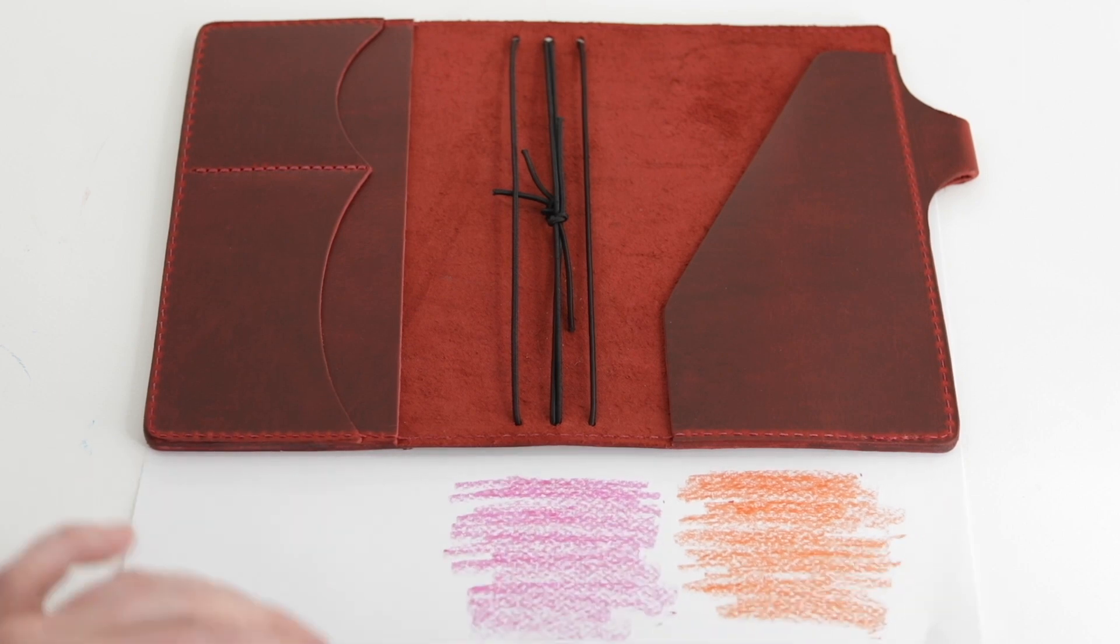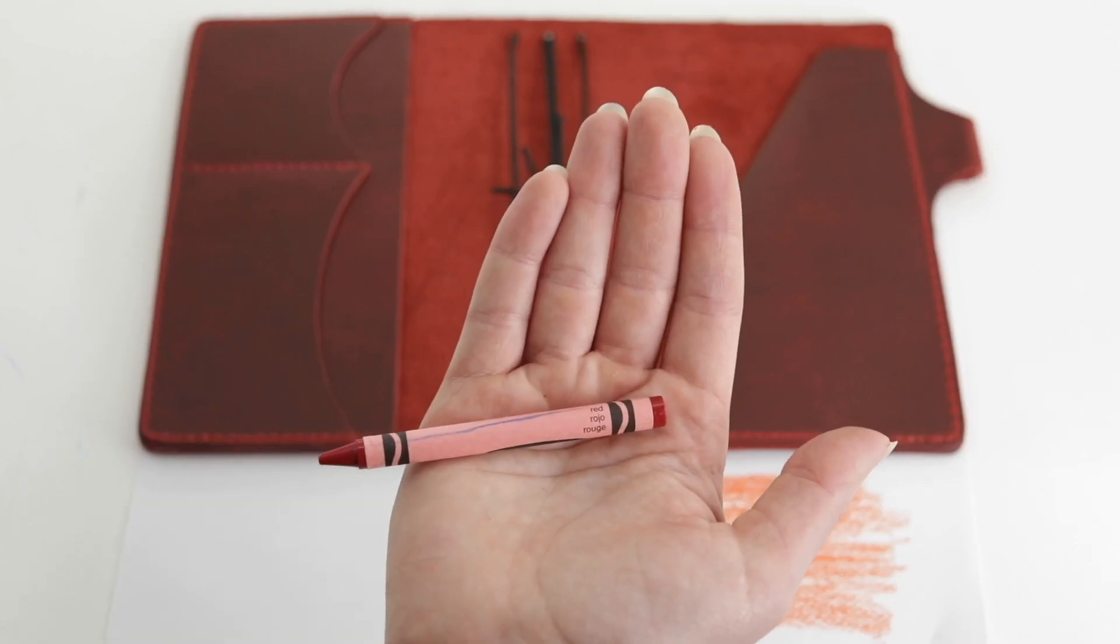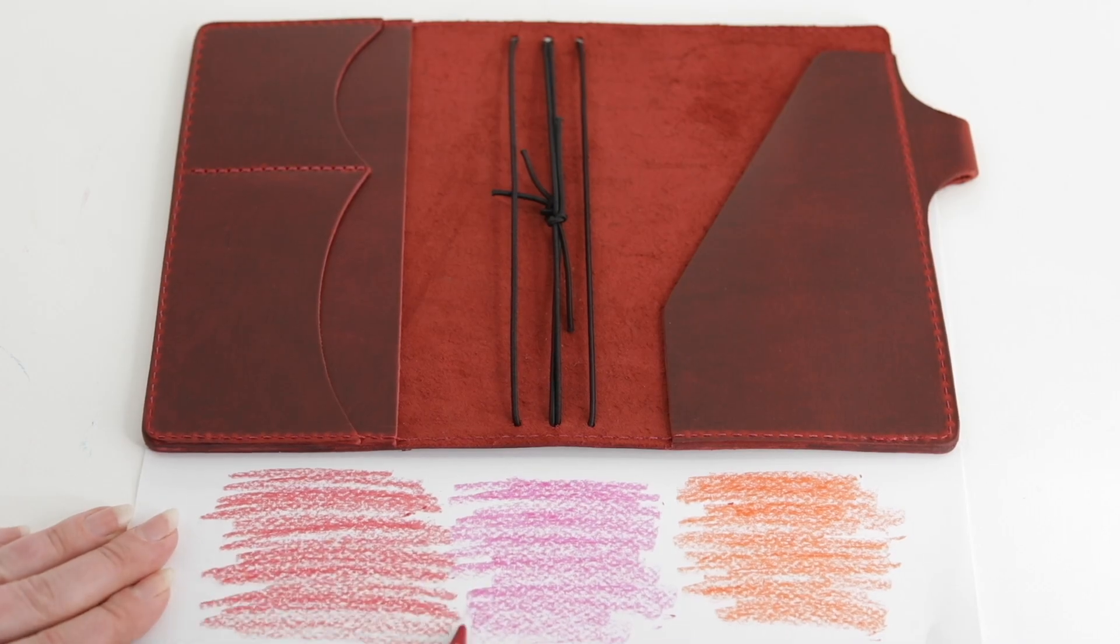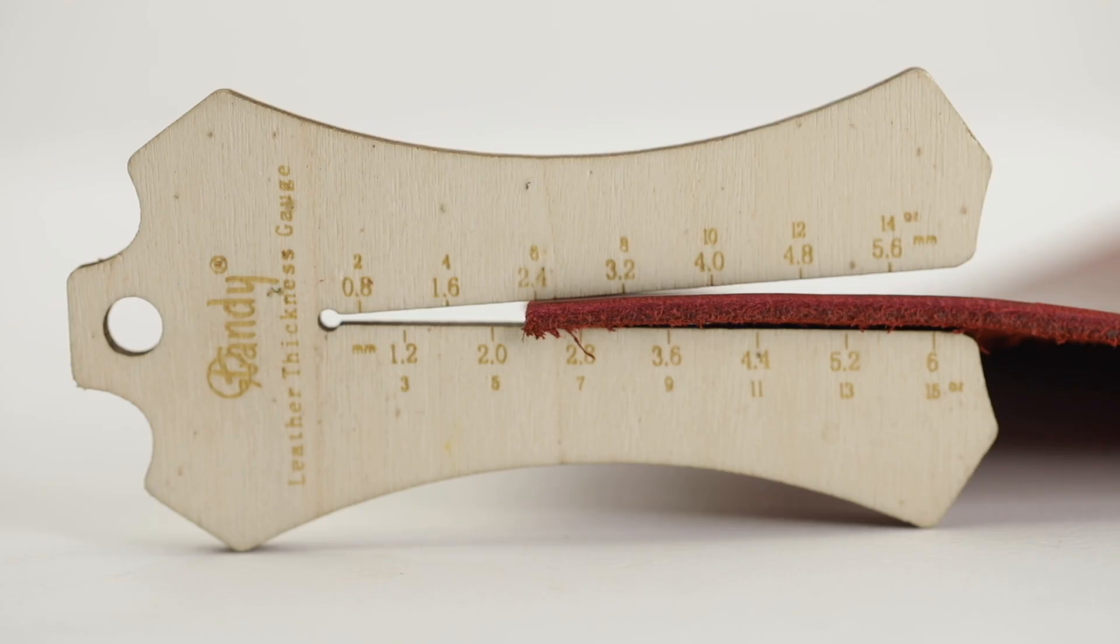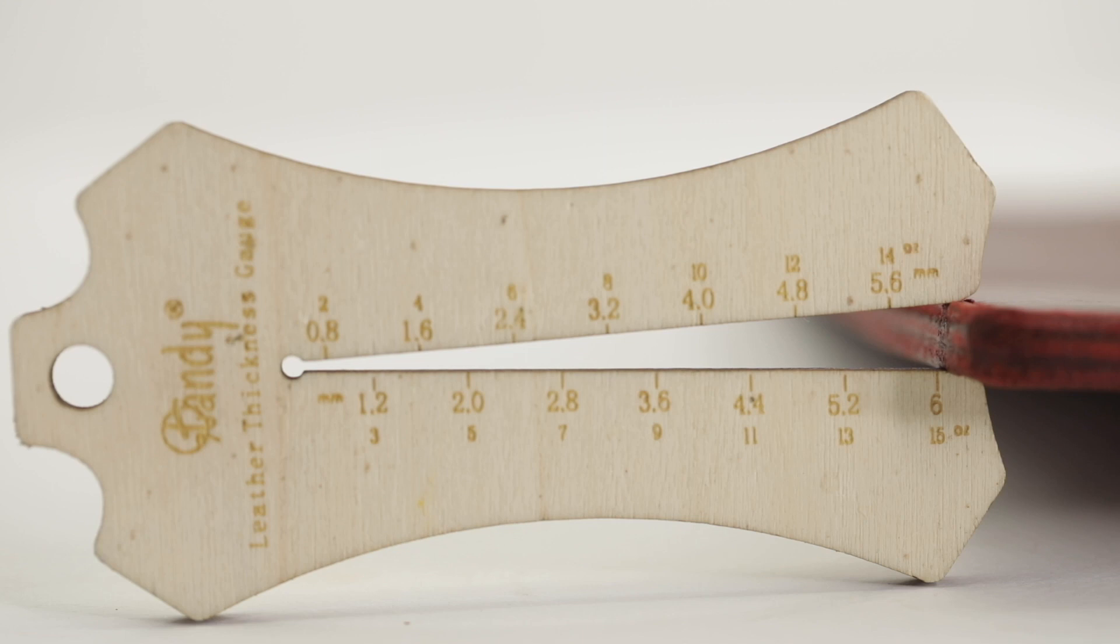So the red here is the Frasier and it is a true red. It measures two and a half ounces on the thin parts and you can see the thick parts there. Overall it's a beautiful Frasier red with matching stitching.